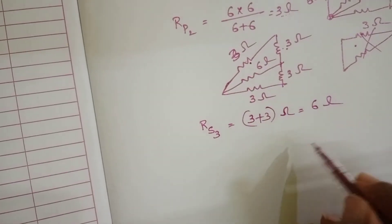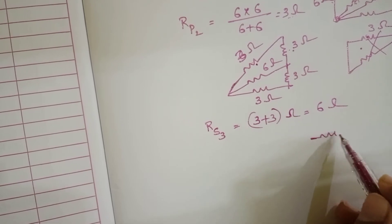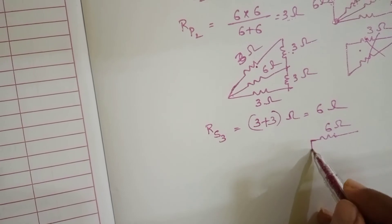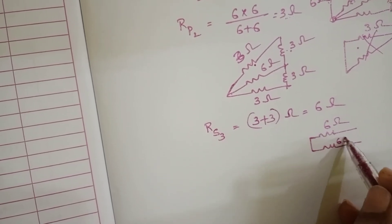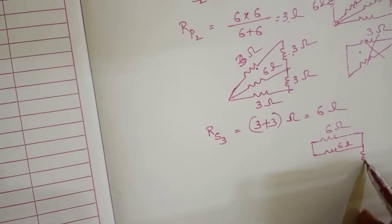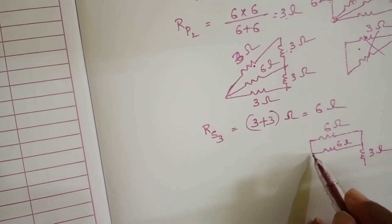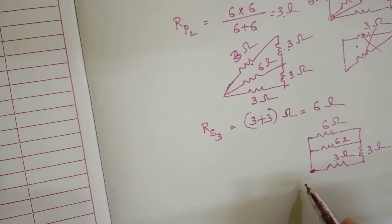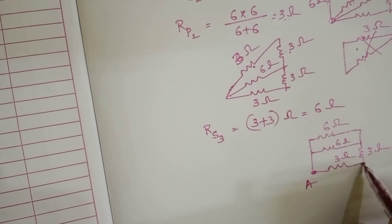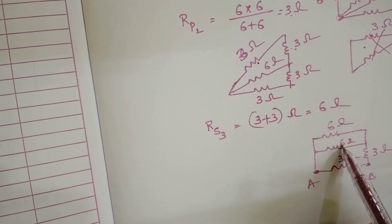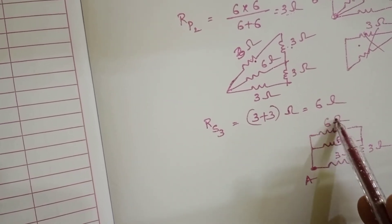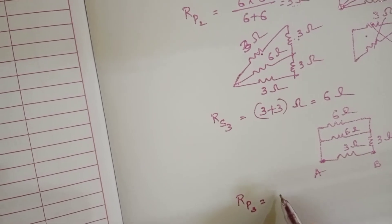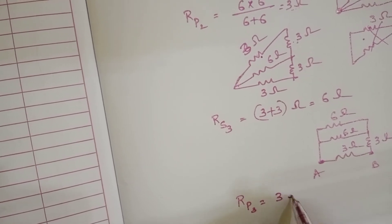This is a 2 ohm, 6 ohm, 6 ohm and now the circuit diagram. Here 6 ohm at the same point, and here 6 ohm, and here another resistor 3 ohm, and here another resistor 3 ohm. This point is A and this point is B. This 6 ohm and 6 ohm — these two resistors are in parallel, so RP3 is equal to 3 ohm.